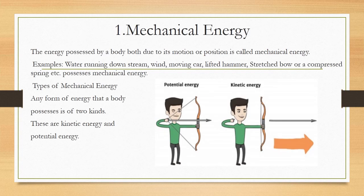Mechanical energy is the energy possessed by a body due to its motion or position. Examples include water running downstream, wind, a moving car, a lifting hammer, a stretched bow, or a compressed spring — all possess mechanical energy. Mechanical energy is divided into two types: potential energy and kinetic energy.